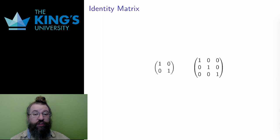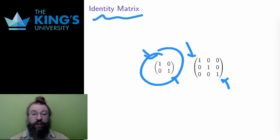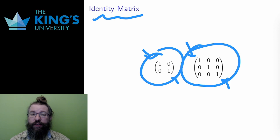There is a unique square matrix in every dimension, where the diagonal entries are 1, and everything else is 0. These matrices, one for each square size, are called identity matrices. So this is the 2x2 identity matrix, and this is the 3x3 identity matrix.